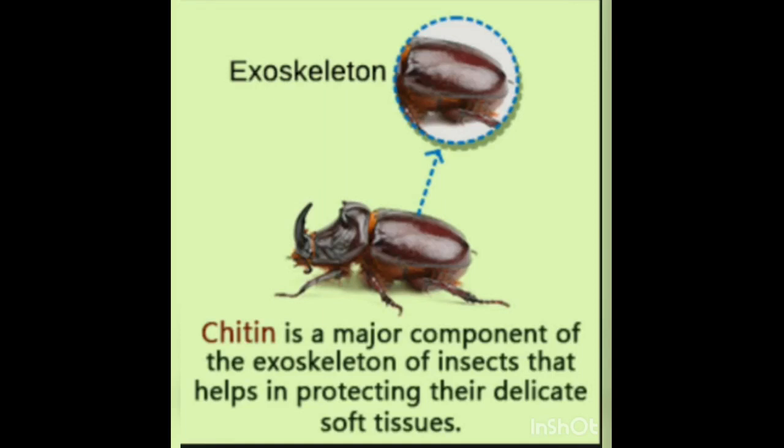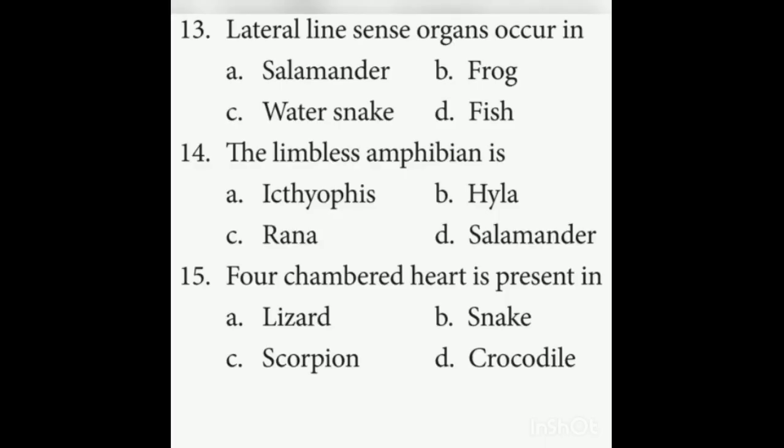Thirteenth question: Lateral line sense organs occur in which animals? Fish. In fishes, the lateral line sense organs are present.